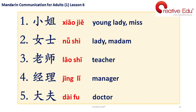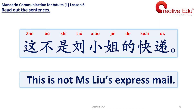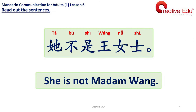Number 5: 大夫 — Doctor. Next, read out the sentences. Number 1: 这不是刘小姐的快递。This is not Miss Liu's express meal. Number 2: 她不是王女士。She is not Madam Wang. 她不是王女士。